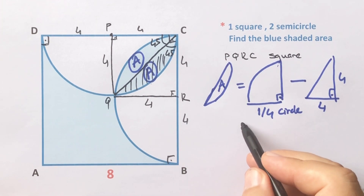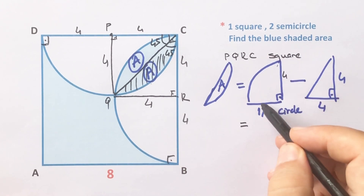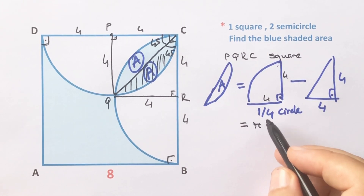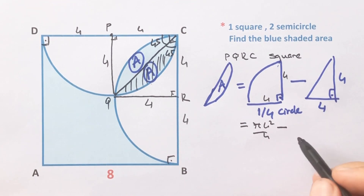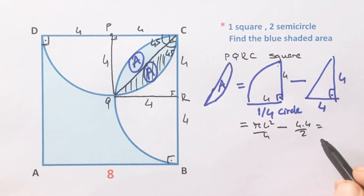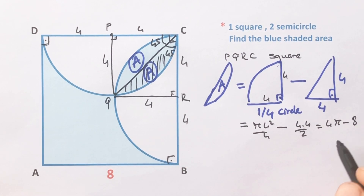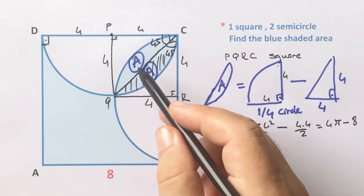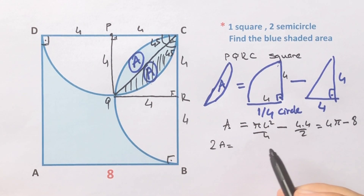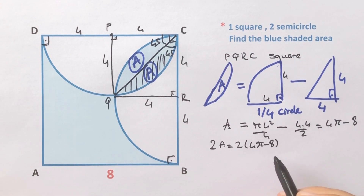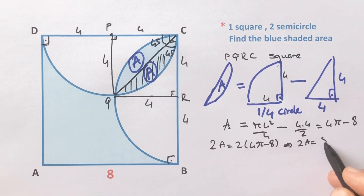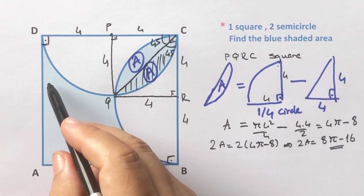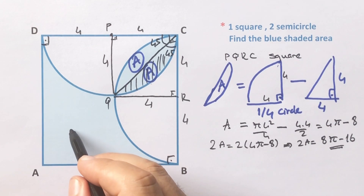The area of region A: the radius is 4 units, so it's π×4² over 4, minus the triangle area which is half the base times height — giving 4π minus 8 unit square. Therefore 2A equals 2 times (4π minus 8), so 2A equals 8π minus 16 unit square.